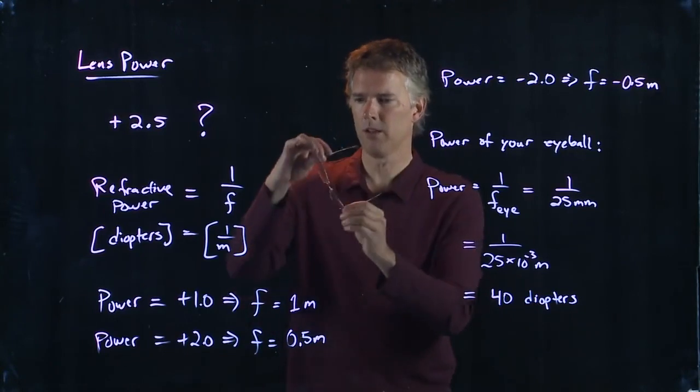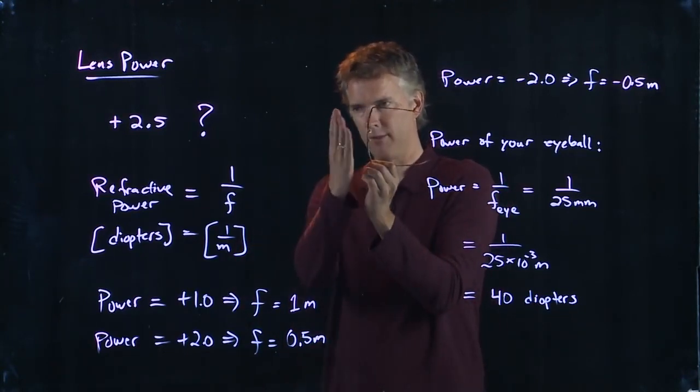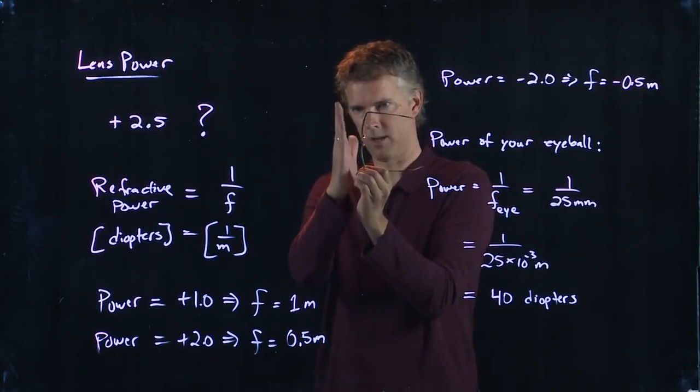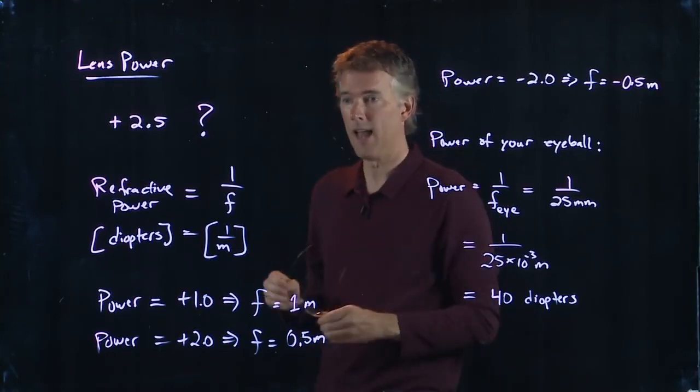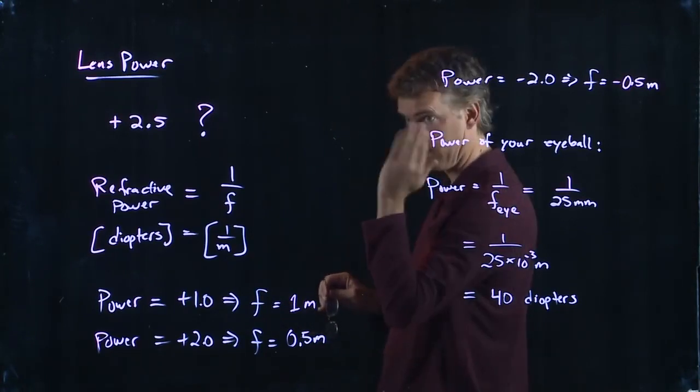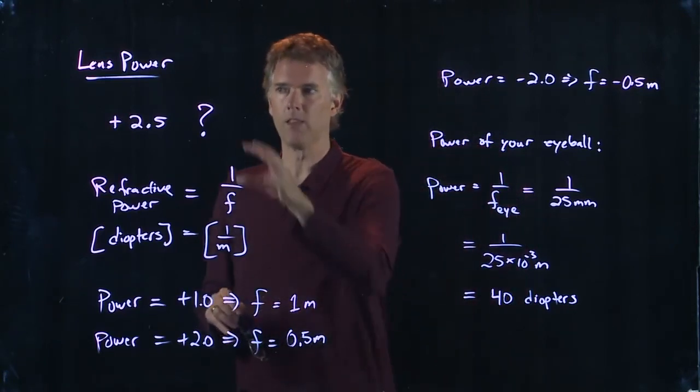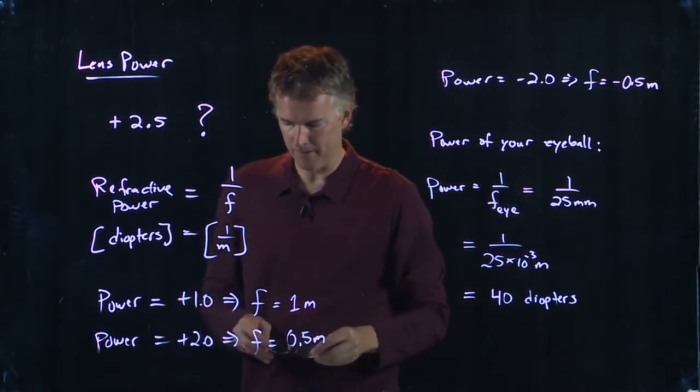The way you can tell this is, if I just look at the glasses edge on, they're not very curved. They're a little bit curved, but not very. And if I look at my eyeball edge on, it is really very curved—it looks like a marble. The more it's curved, the shorter the focal length, the bigger the lens power.